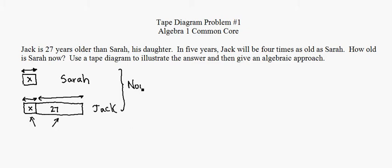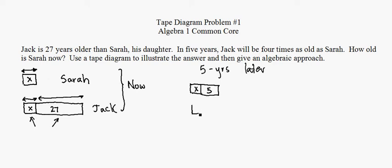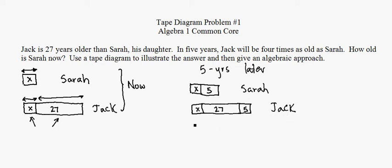But what about five years from now? Five years later — pretty simple, right? What's the deal with Sarah? Well, she's got the X, but then she's got an additional five. Now again, I don't really know the relative size of the X and the five. What's Jack? Jack is pretty easy — Jack is the X, the 27 more than the X, and then of course another five. So here's Sarah's age, and here's Jack's age five years from now. We could make Jack's age a little bit easier — we could say this is X, and then this is 32, since we're adding the 27 and 5 together.